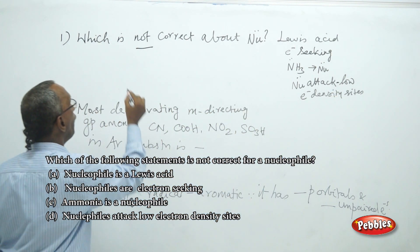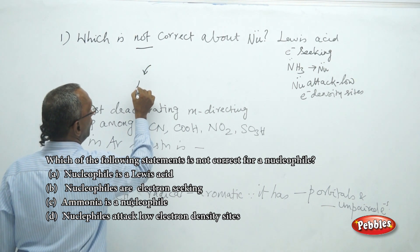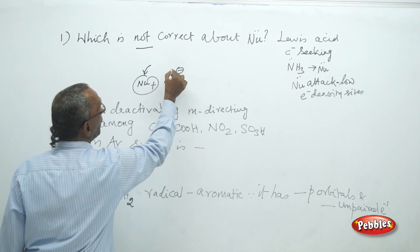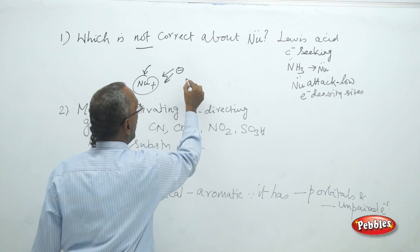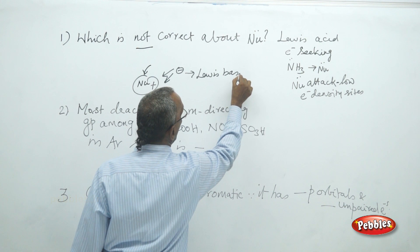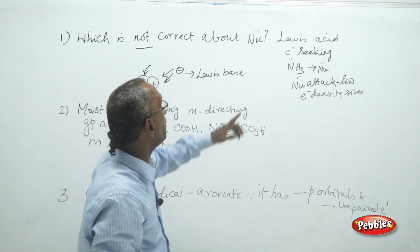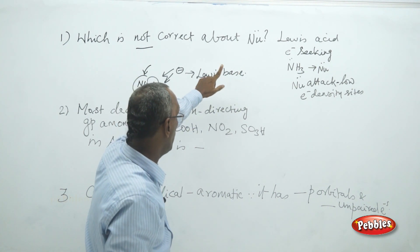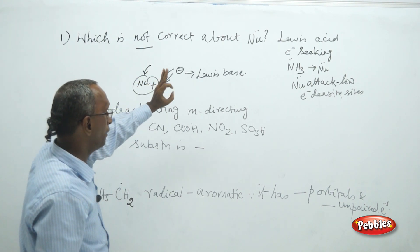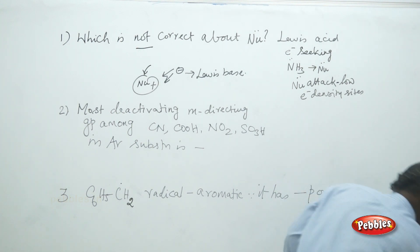Nucleophile means a species attracted by the nucleus. The nucleus is positively charged, so only negatively charged species will be attracted by it. Negatively charged species means it is a Lewis base. Lewis bases are electron-donating or negatively charged species. So the first statement itself is not correct — a nucleophile is a Lewis base, not a Lewis acid.